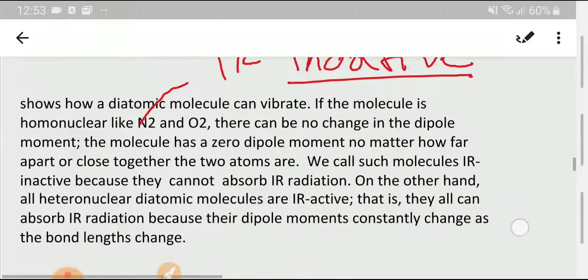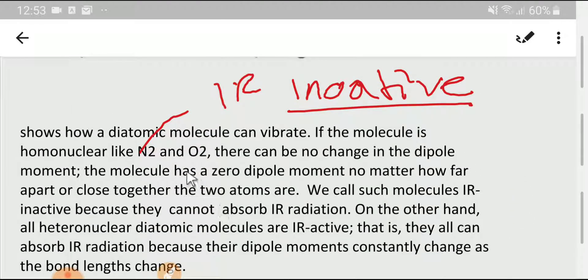So the answer is nitrogen is not a greenhouse gas because when a nitrogen molecule vibrates, no dipole moment change happens. Thank you for viewing this video. Be well.